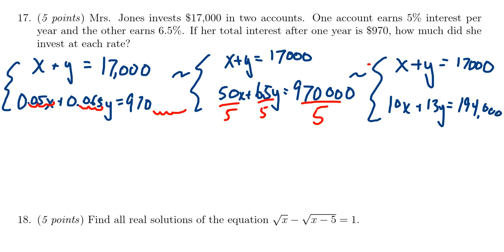I'm going to times the first equation by negative 10. So what that does for us is we get negative 10X minus 10Y equals negative 170,000. Multiplication by 10 is pretty easy. Then in the second equation, we have 10X plus 13Y equals 194,000. So when we add these two equations together, the 10s will cancel out, the 10X I should say.